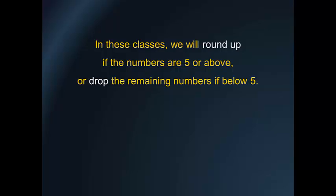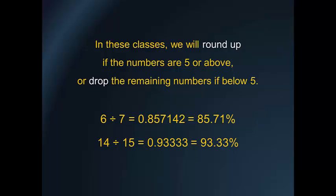In these classes, we will round up if the numbers are 5 or above, and drop the remaining numbers if below 5. Example: 6 divided by 7 equals 0.857142, equals 85.71 percent. Or 14 divided by 15 equals 0.93333, equals 93.33 percent. Or 7 divided by 9 equals 0.77777, equals 77.78 percent.